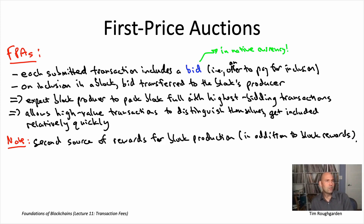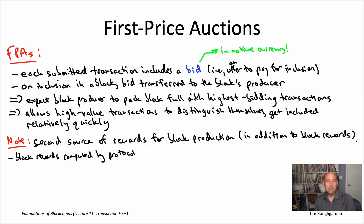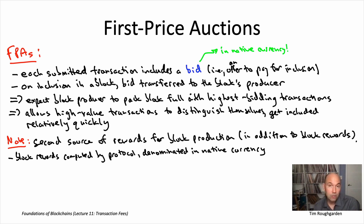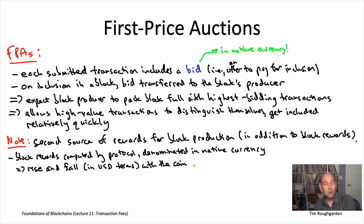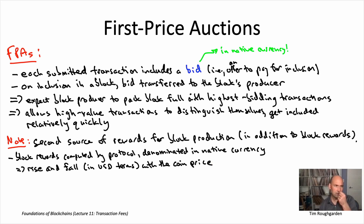These two sources of rewards are conceptually quite different. The block reward is predictable — it's embedded in the protocol code and computed by the protocol, denominated in the native currency. While block rewards may be predictable in native currency terms, they're unpredictable in USD terms: as the coin price rises and falls, so does the value of the block reward. What really controls the USD value of block rewards is the current demand for the native currency. For example, higher demand for bitcoins leads to a higher USD price, and thus a higher USD value of bitcoin's block rewards.